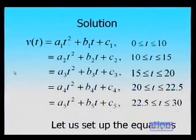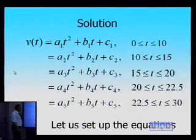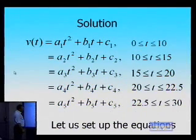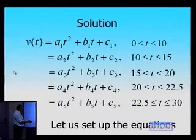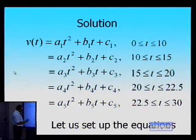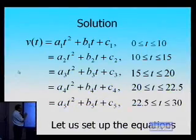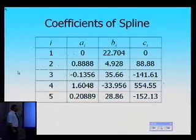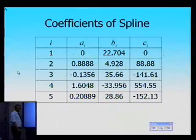So to recap a little bit, somebody gave us six data points from 0 to 30, and we said that we'll need five quadratic splines to go through the six consecutive data points, and we'll have 15 equations and 15 unknowns. That's what we did in the last segment — set up those 15 equations and 15 unknowns, and that's what we got as the individual coefficients of the spline.